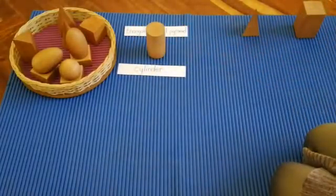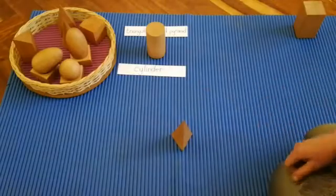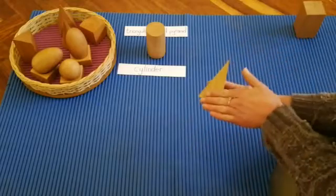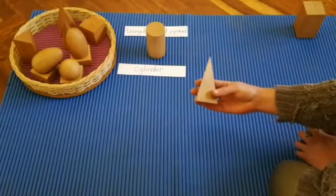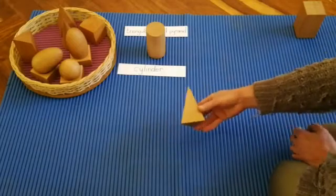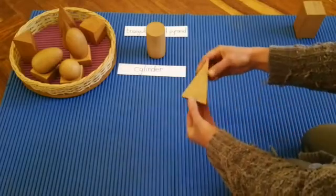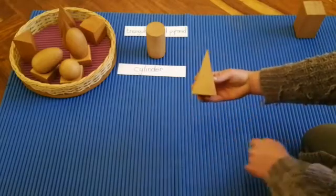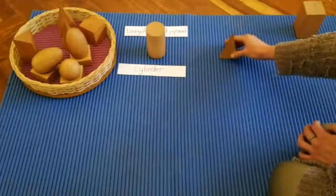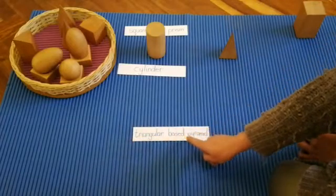The next solid we're going to learn is our triangular based pyramid. This shape has got one, two, three, four plain flat sides. And it comes up to a sharp point. The base is a small triangle and the sides are bigger triangles. This is our triangular based pyramid. This label says triangular based pyramid.